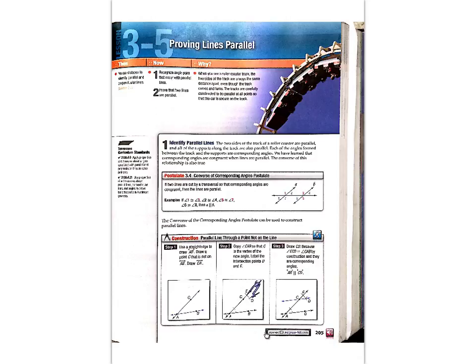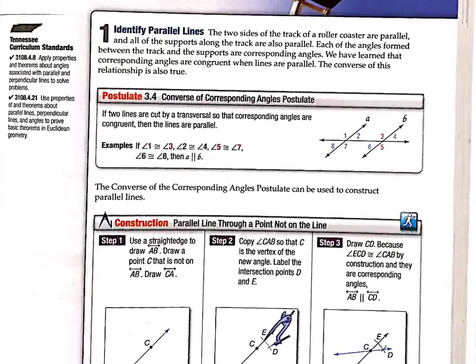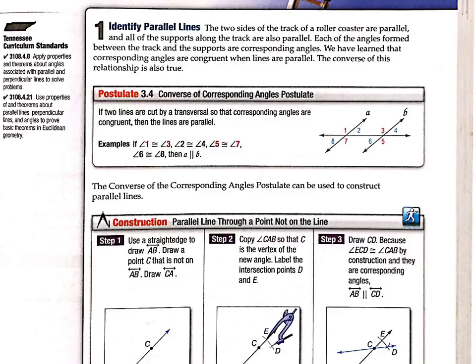So if corresponding angles are congruent, example 1 and 3, if those are congruent, then what do we know? We know lines A and B are parallel. So that's proving they're parallel, but it's opposite of what we learned before. We learned earlier if they were parallel, then corresponding angles are congruent. So basically, it's the same lesson.